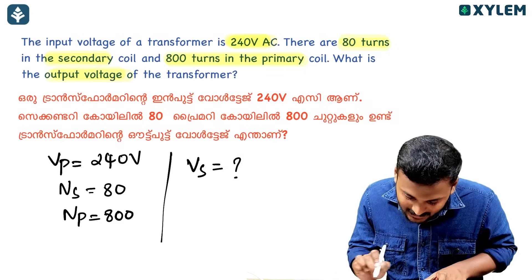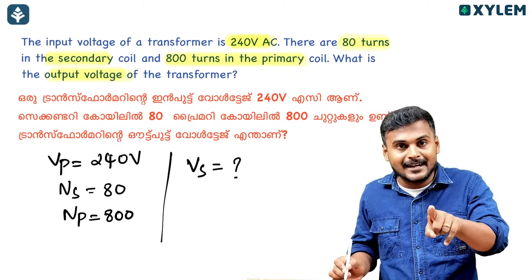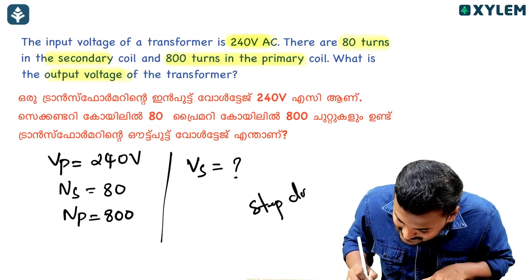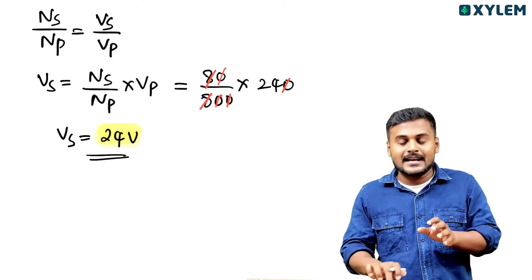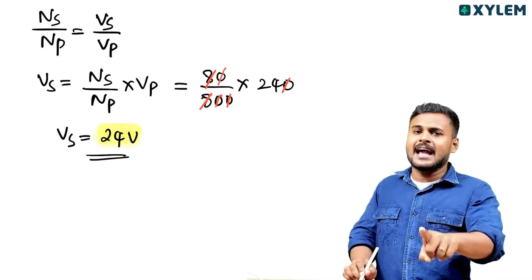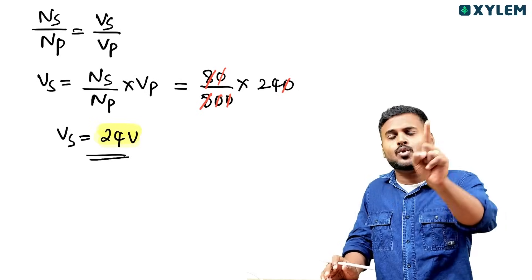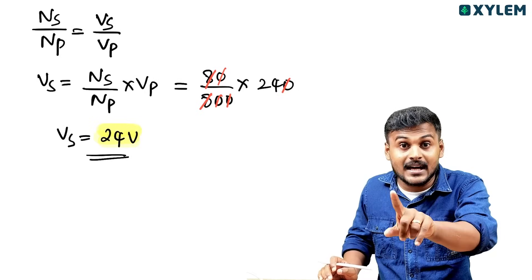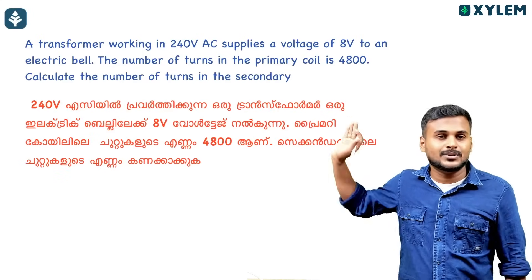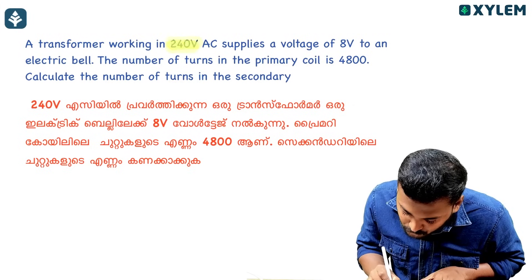The primary has 80 turns and secondary turns make this a step-down transformer. The output voltage is 24 volts, and the input is greater, confirming it is a step-down transformer.